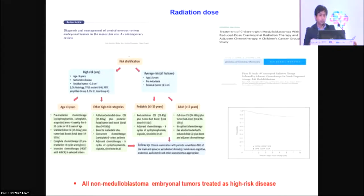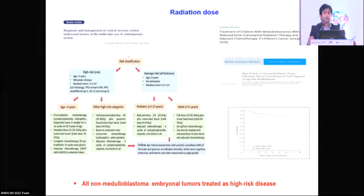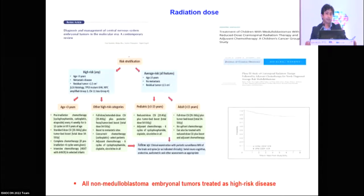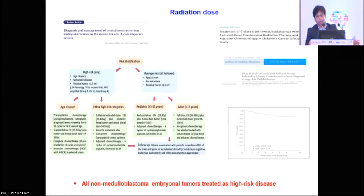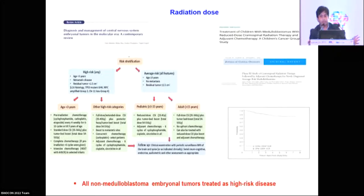For patients less than three years, in our center we give chemotherapy first and try to postpone radiation as long as possible, then proceed to full-dose craniospinal radiation of 35 to 36 Gy. For high-risk categories, we typically give 35 Gy CSI and can go up to 40 Gy for higher metastatic burden. The tumor bed primary site receives a total dose of 54 to 55 Gy in all cases.